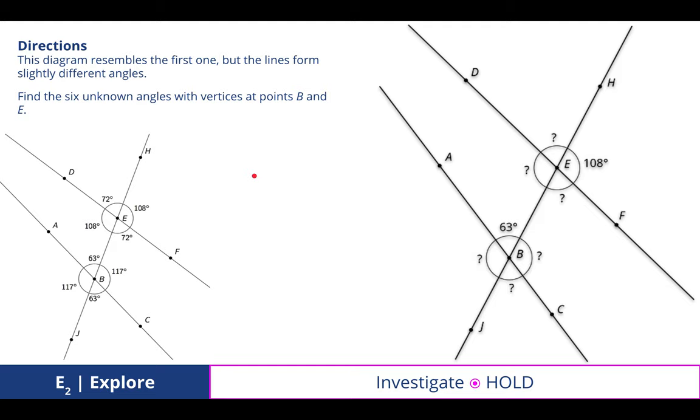Here's a second activity. But in this case, the two lines are not parallel. So we cannot make these same assumptions that we did in the previous activity. In this case, if we're trying to find the six unknown angles with vertices at point B and E, there are the answers that we found as we work through the class activity.